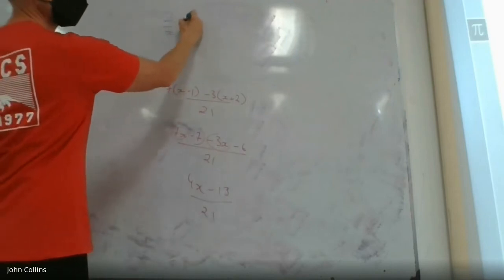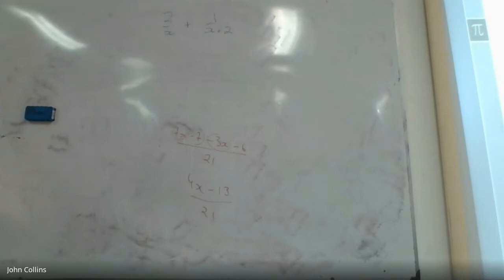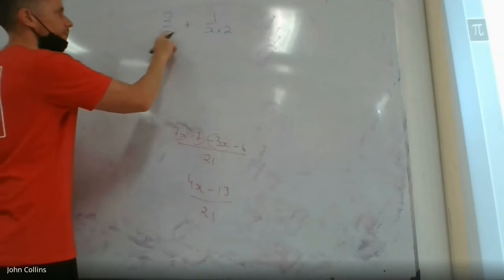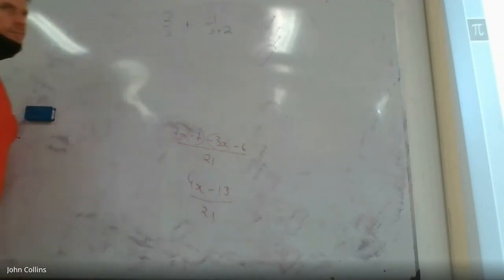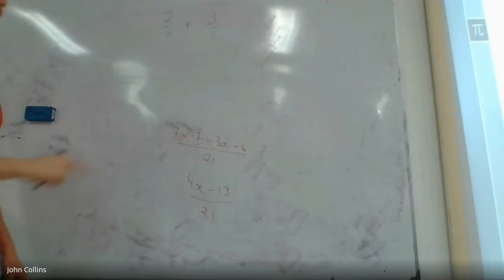2 over x plus 1 over x plus 2. What would be the common denominator here? Anyone want to suggest? Kiana, what's the common denominator? x plus 2? Is that how many disagree? No. Let's suppose x is the number 3. Is the common denominator of those two 5? 3 plus 2 is 5. Common denominator is 15.